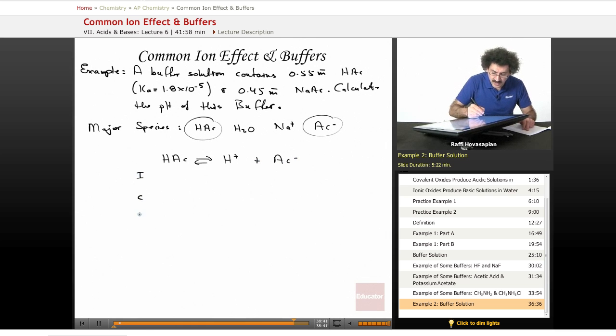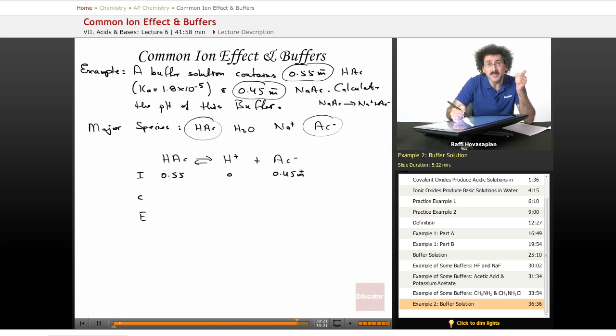Now we'll do an initial, a change, and an equilibrium. Our initial HAC concentration is 0.55 molar. Zero here. Our initial acetate concentration is 0.45 molar. Sodium acetate, fully soluble. It dissolves completely. Just to show you, NaAC dissolves completely to Na plus plus AC minus. That's what this is right here. Therefore, 0.45 moles per liter produces 0.45 moles per liter of acetate.